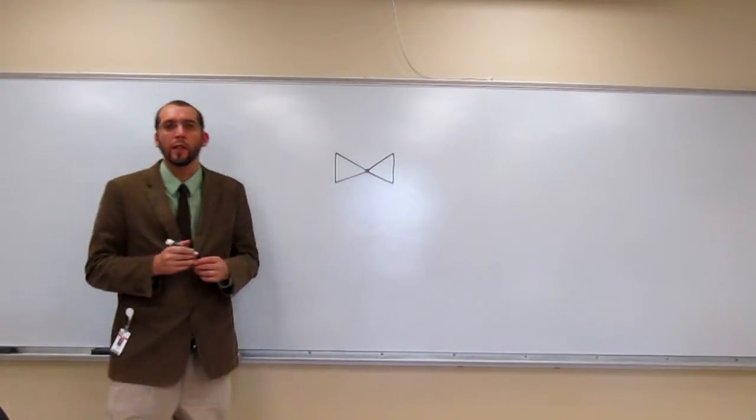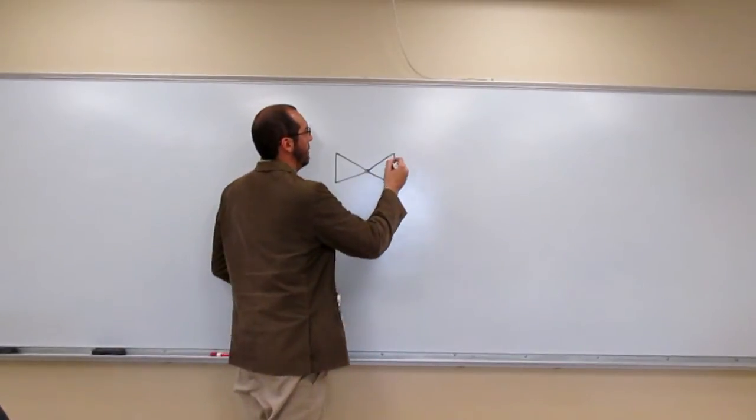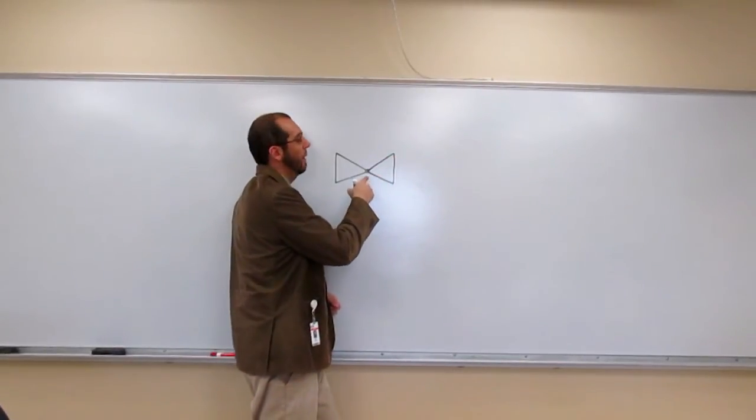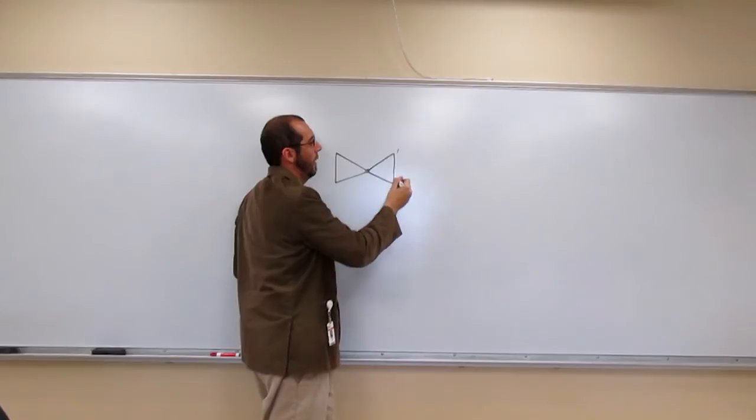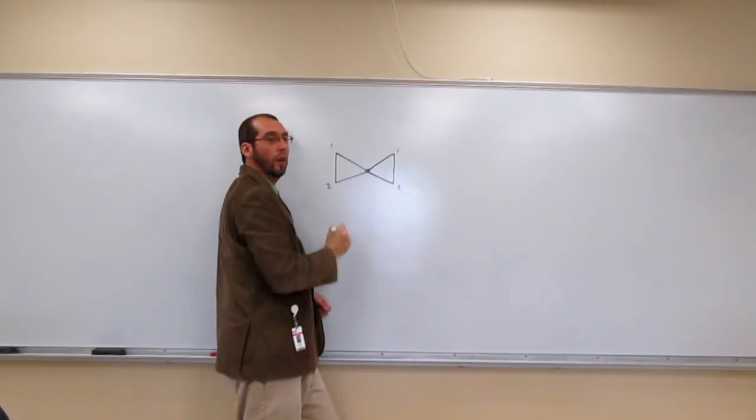And we name them very similarly to the bicyclo compounds. So this one we've probably already figured out. I'm just going to write some things down. From the spirocenter on this side we've got one, two carbons. On this side we got one, two carbons.